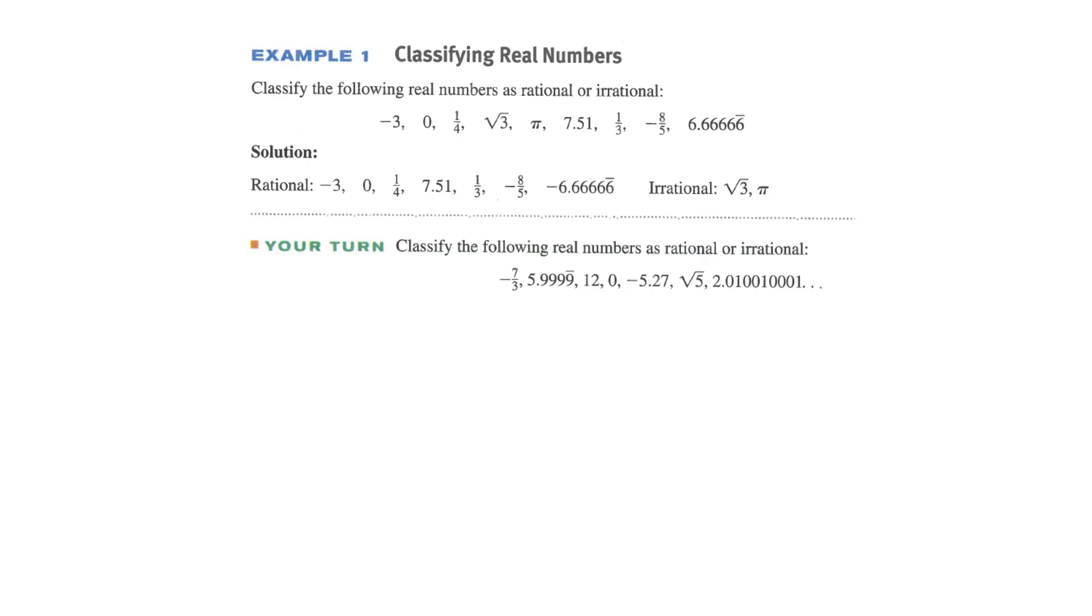Let's classify some here. So if we have this list, which ones are rational and which ones are irrational? Remember, rational, it either stops, the decimal that stops, or that repeats. For instance, 6.6666, the little bar says it repeats forever. That's going to be rational because it repeats. In terminating, we could say something like even negative 3 is going to be rational because that's negative 3.0. It stops.